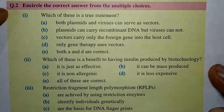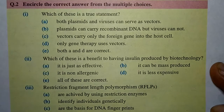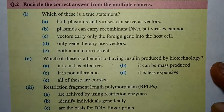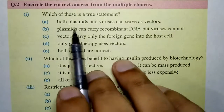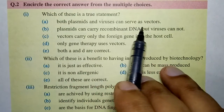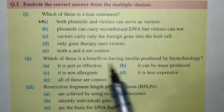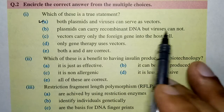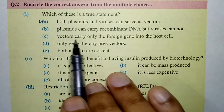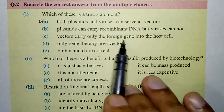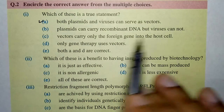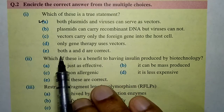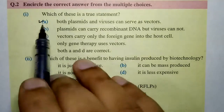Now let's move to the multiple choice questions. The first MCQ: 'Which of these is a true statement?' Option A — both plasmids and viruses can serve as vectors — that is the correct answer. Plasmids can carry recombinant DNA. Option B says viruses cannot, which is incorrect. Option C says vectors carry only foreign gene into host cells — also incorrect. Only gene therapy uses vectors — also wrong.